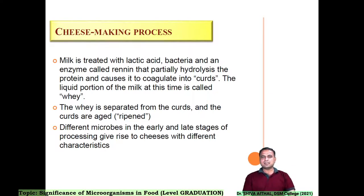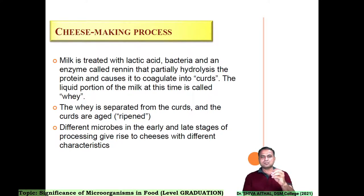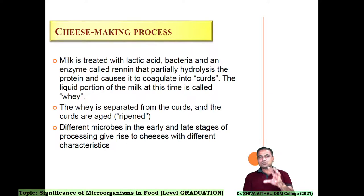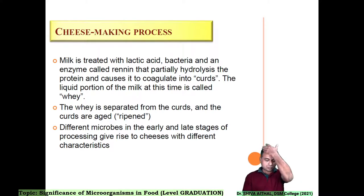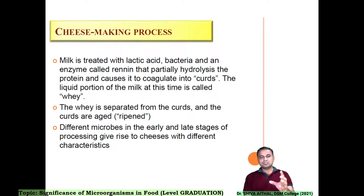Cheese is one very internationally famous product, rich in most of the minor and major elements required for your body. The cheese making process is an art. The process is: milk is treated with lactic acid bacteria and the enzyme rennin. Rennin hydrolyzes the protein present in the milk and allows it to coagulate into curds. When you add lactic acid bacteria in milk, rennin coagulates the protein into curds. The liquid portion of the milk is called whey — bodybuilders drink this; it can be converted into whey powder as a source of protein.